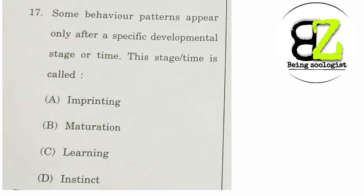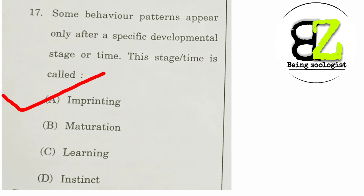Next question: some behavior patterns appear only after a specific developmental stage or time — this stage or time is called what? The answer according to me is imprinting, because maturation and learning don't fit, and instinct doesn't apply here. Imprinting refers to a critical time period in which specific things are learned, and if that period passes, those things cannot be learned. So our answer is option A — imprinting.